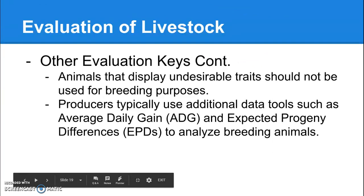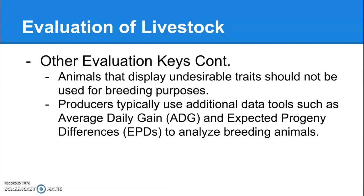Animals that display undesirable characteristics really should not be used for breeding purposes. They can be used as meat animals, but they'll typically receive a lower grade than animals with desirable characteristics. You don't want to continue breeding undesirable traits throughout your herd. Producers can also use data tools like average daily gain and expected progeny differences to analyze breeding animals, though those won't be covered in this particular class.